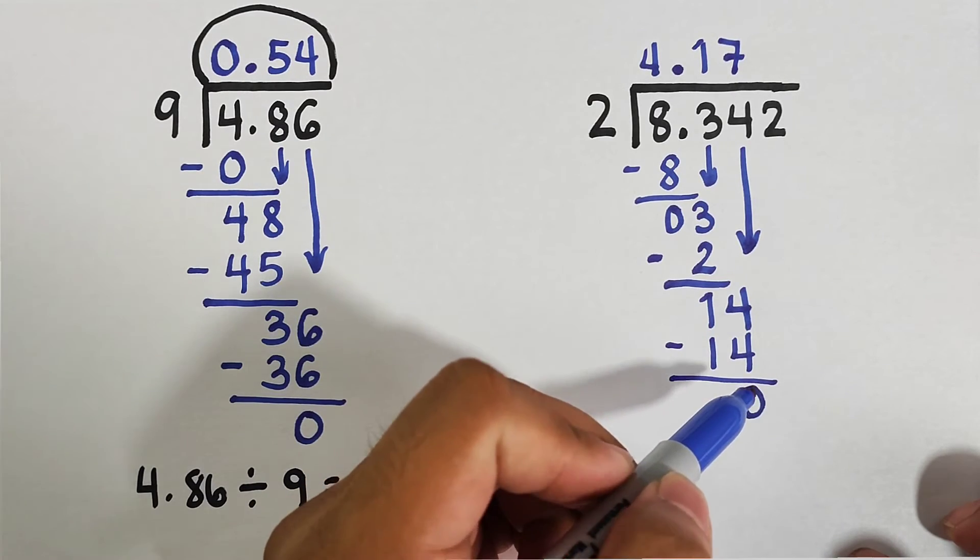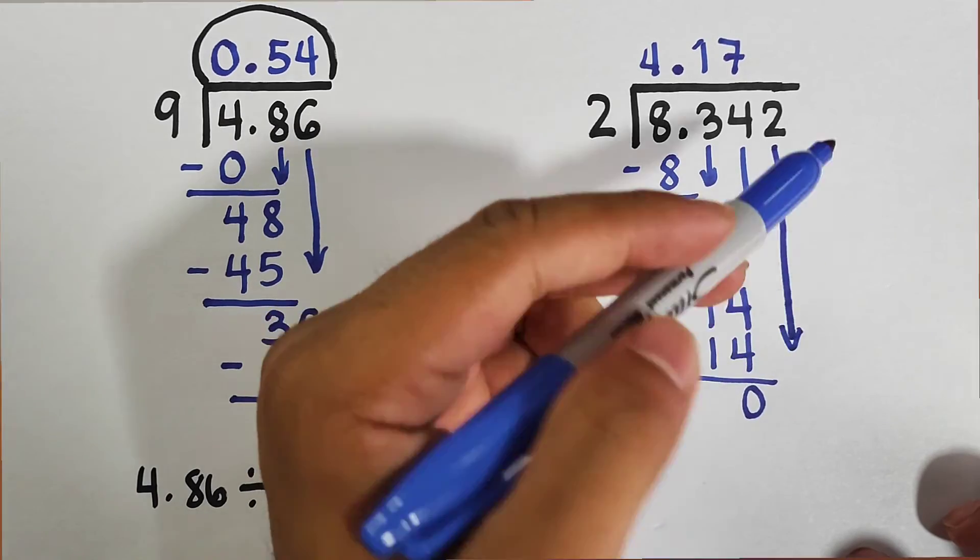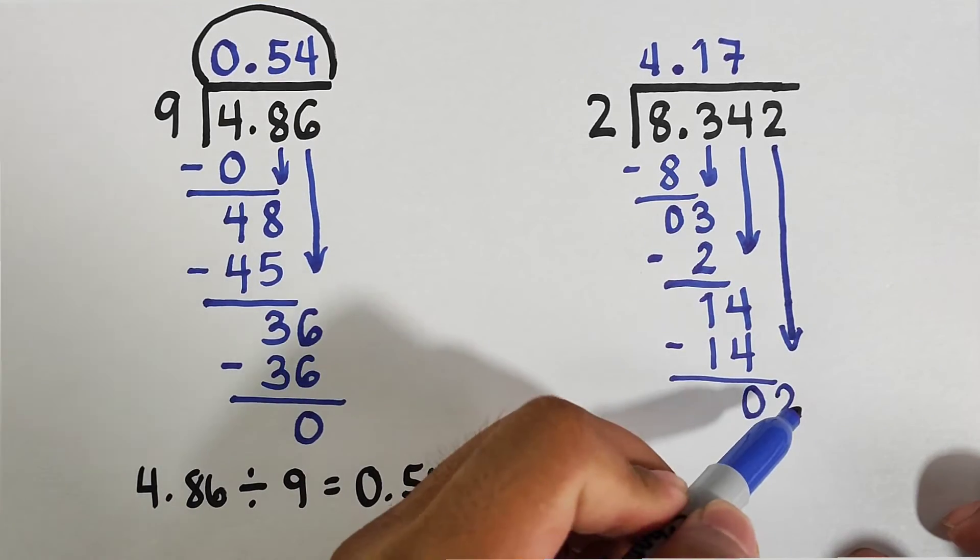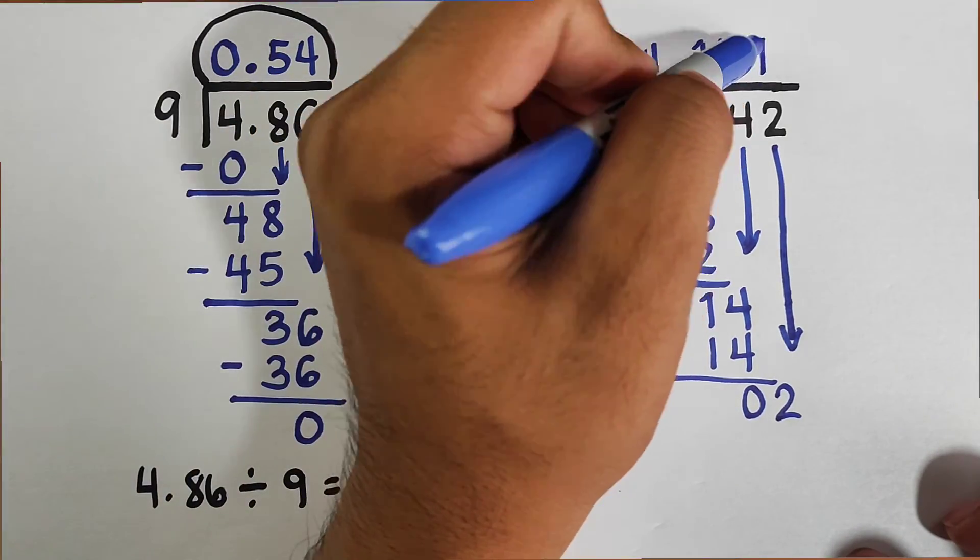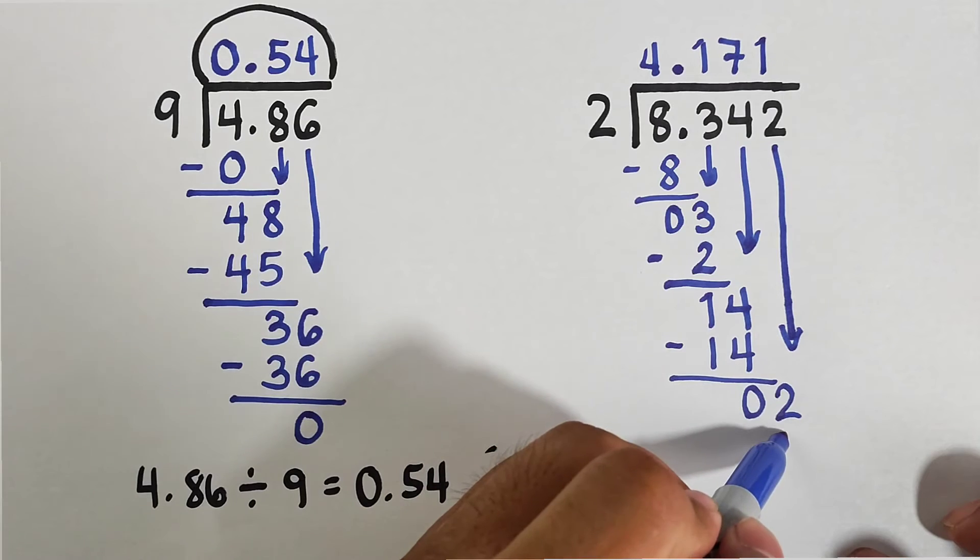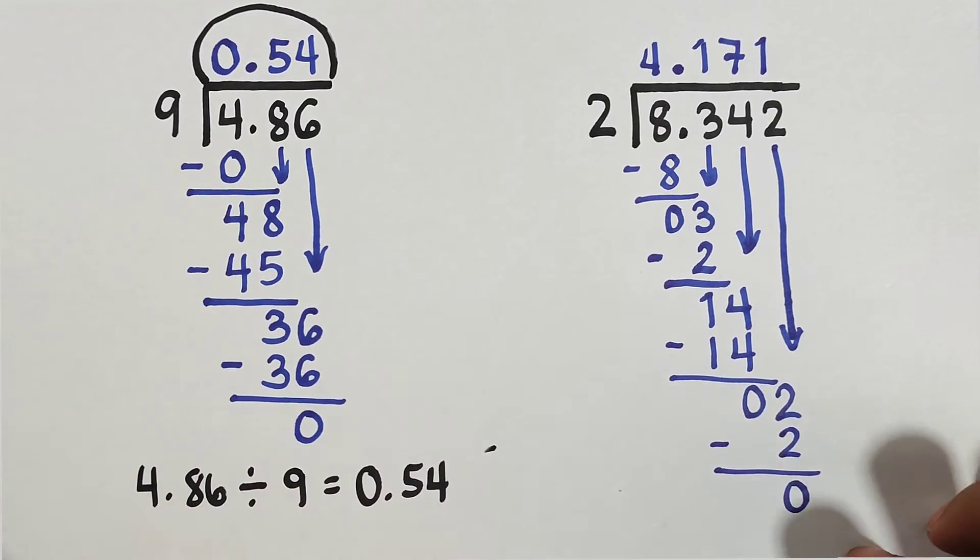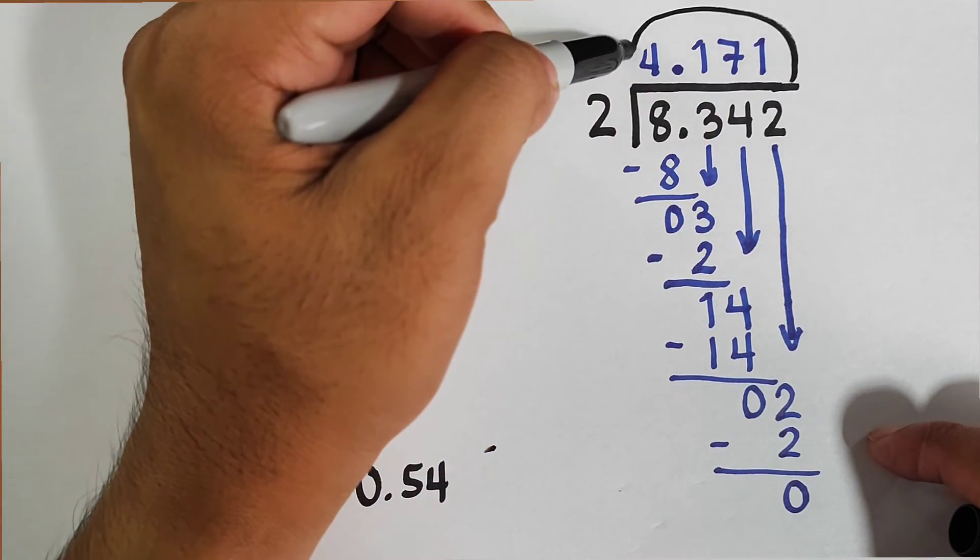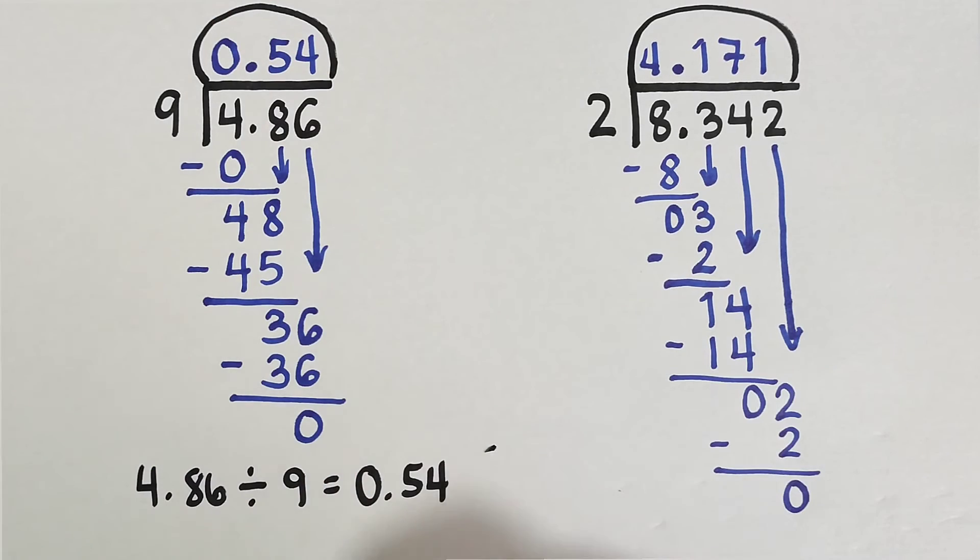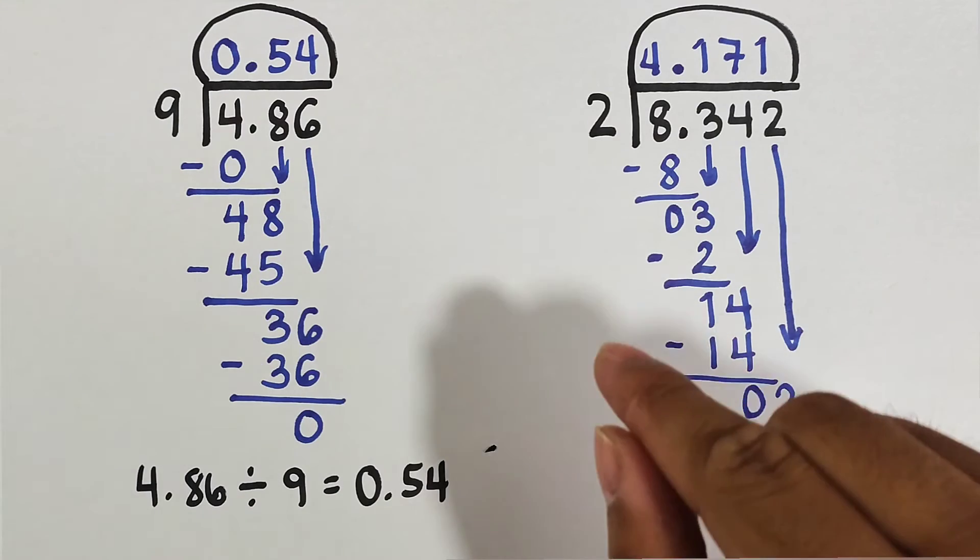7 times 2 equals 14. As you can see, in subtracting this it will become 0. And we still have another one to bring down. The answer is 4.171, so 8.342 divided by 2 equals 4.171.